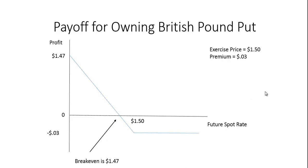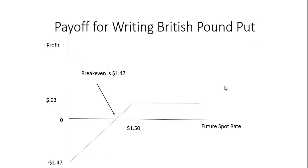If somebody owns a pound sterling put, someone has to be writing those put options, and again we see the same mirror image. The writer makes money as long as the price is above $1.50, the break-even is the same $1.47, and the worst they can do is lose $1.47.